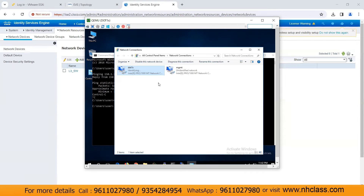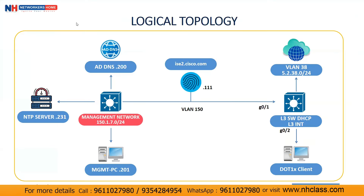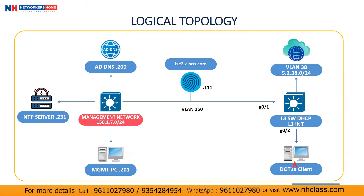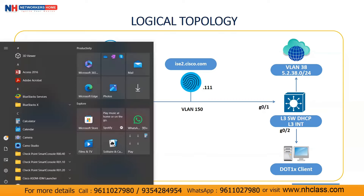Remember, before 802.1x occurred, first it sent a certificate check request to Cisco ISE before sending the authentication request. It performs the certificate check first, and only then proceeds with 802.1x authentication. Now let me demonstrate that without the certificate check, your 802.1x authentication will not occur.